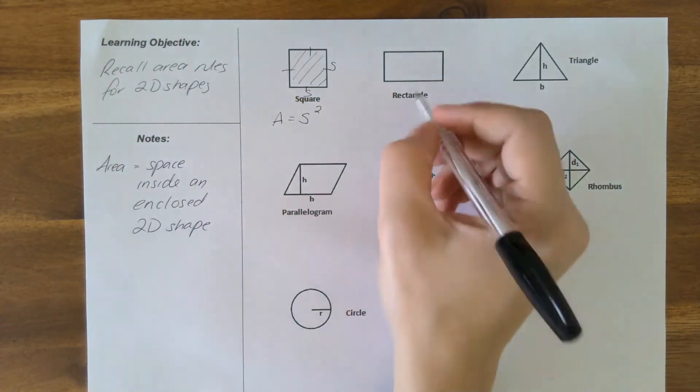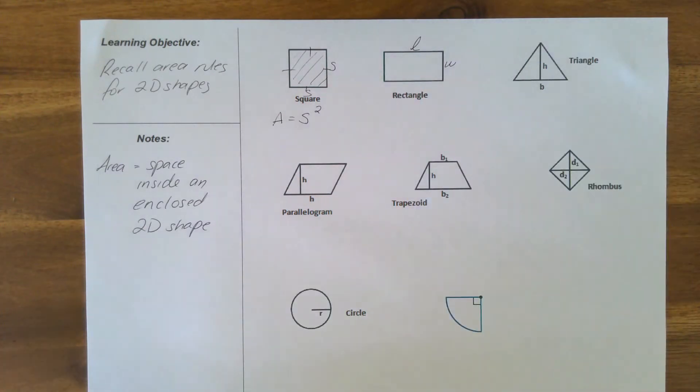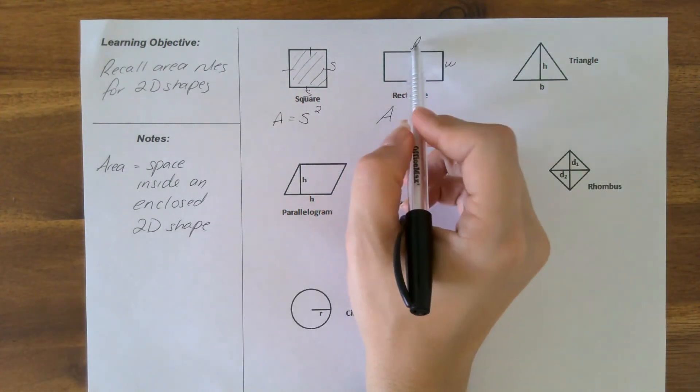A rectangle, we have dimensions of length and dimensions of the width. Our area is going to be our length multiplied by our width. These are hopefully quite familiar to you so far.